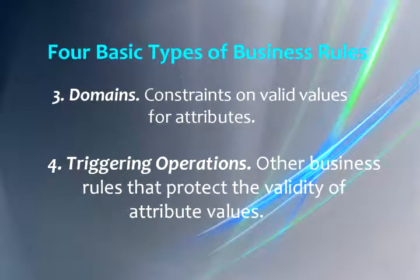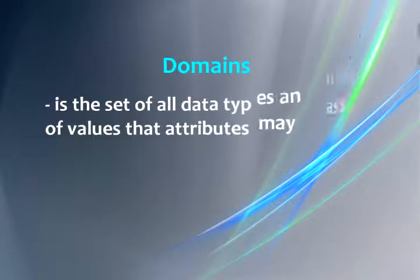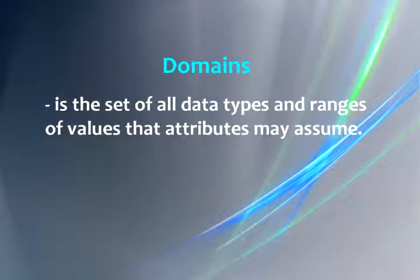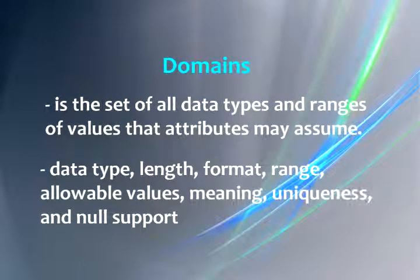And triggering operations are other business rules that protect the validity of attribute values. In this section, we briefly describe two types of rules: domains and triggering operations. A domain is the set of all data types and ranges of values that attributes may assume. Domain definitions typically specify some or all of the following characteristics of attributes: data type, length, format, range, allowable values, meaning, uniqueness, and null support.